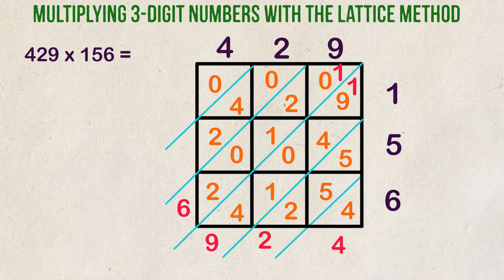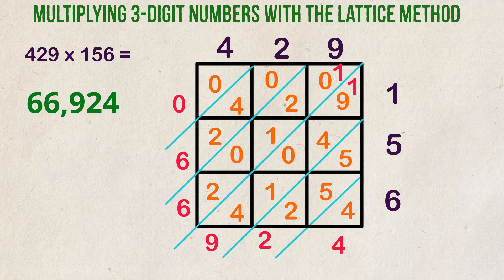Two plus zero plus one plus two plus zero plus the one we carried over is equal to six. Next section. Two plus four plus zero is also equal to six. Last one. Zero is equal to zero. The numbers down the side are zero, six, six, nine, two, four, which is the same thing as 66,924.